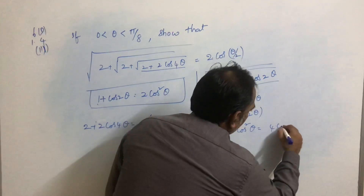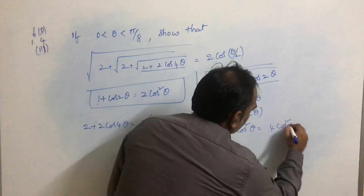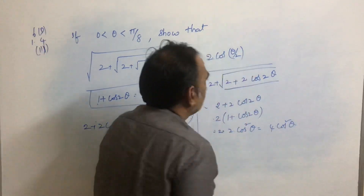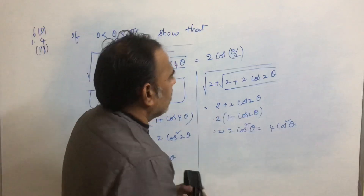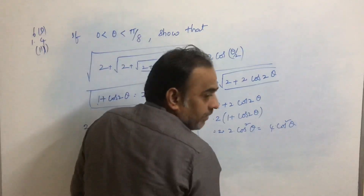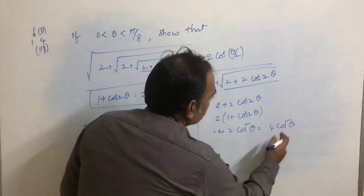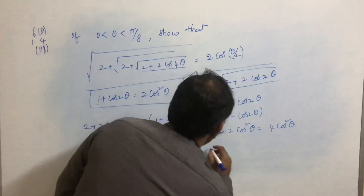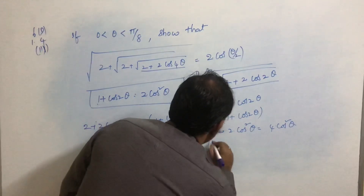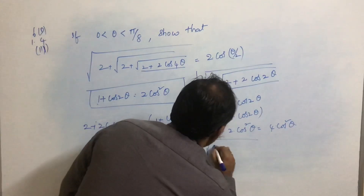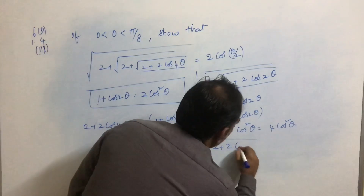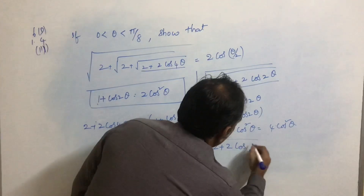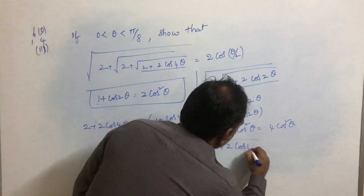That gives 4cos²θ. Applying the square root, it becomes 2cosθ. So the expression simplifies to 2 + 2cosθ.